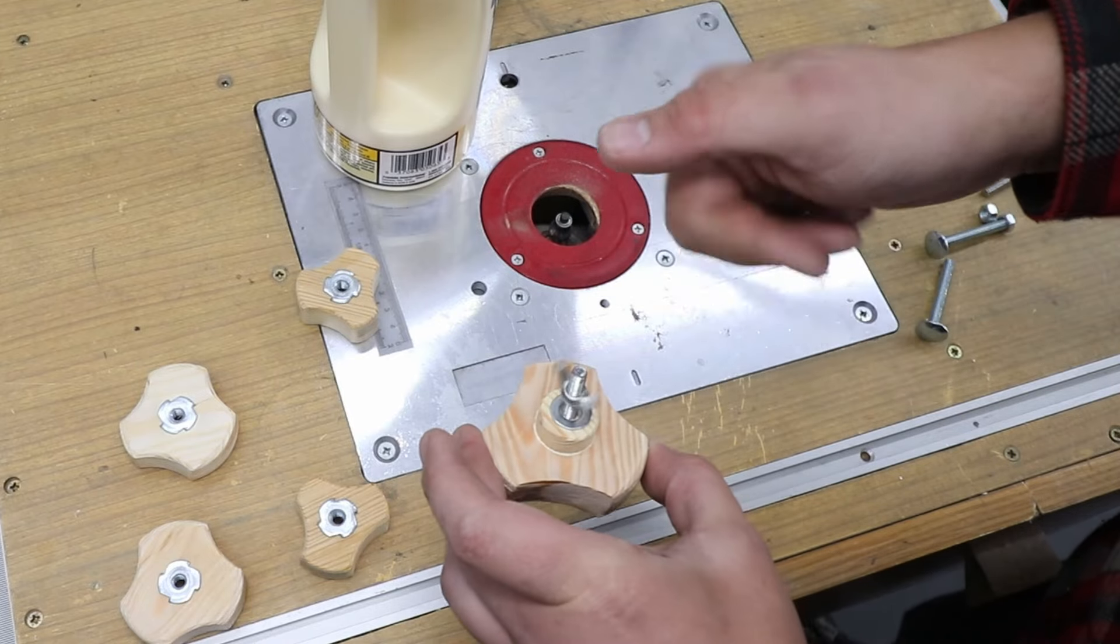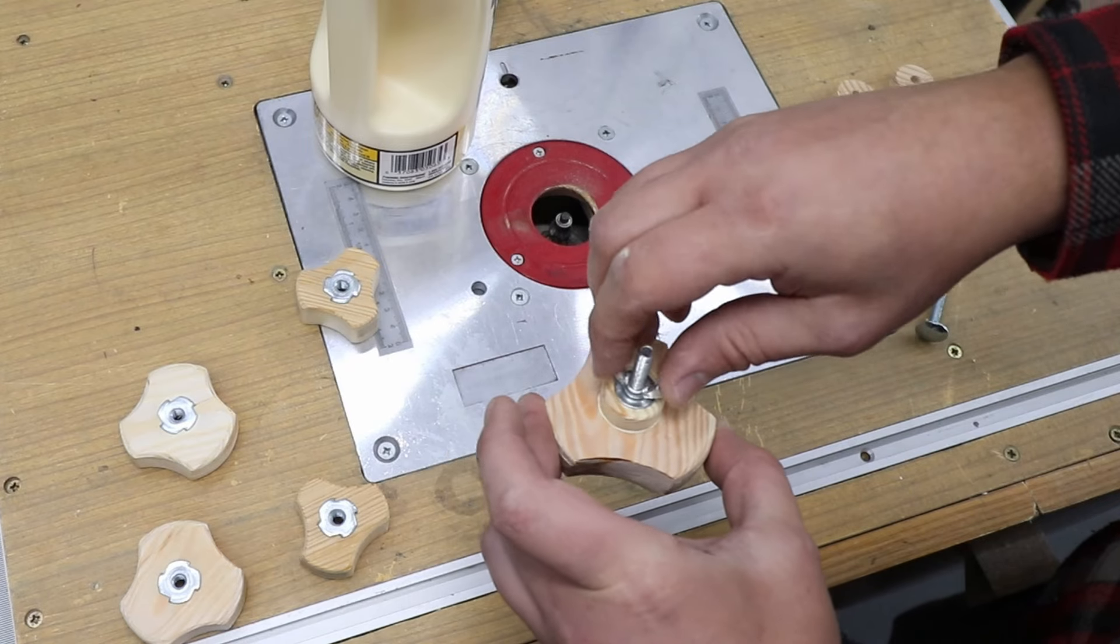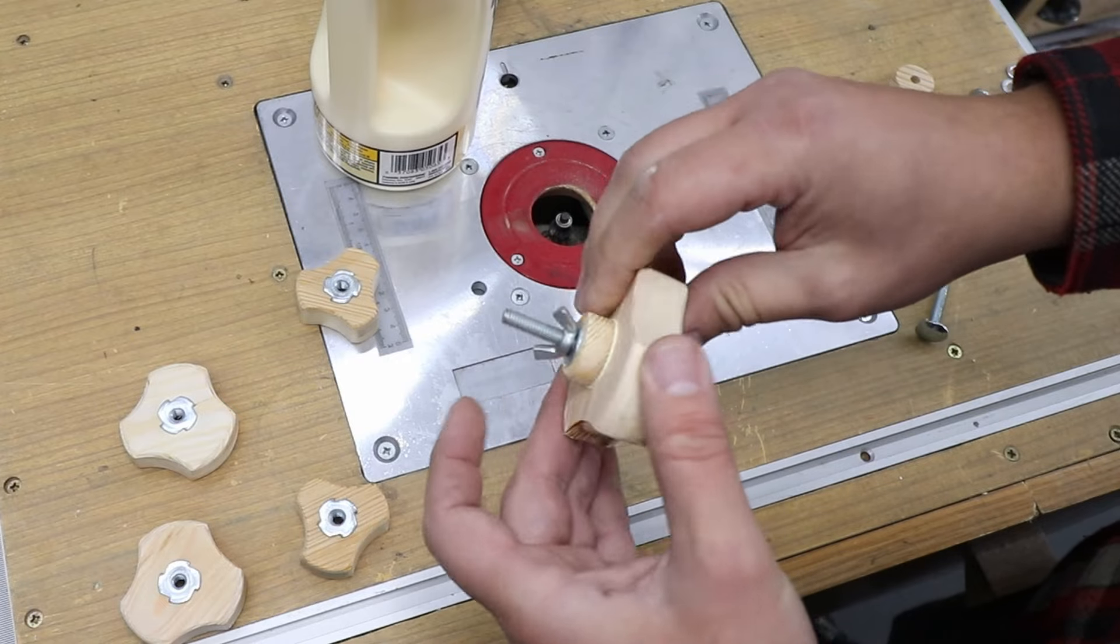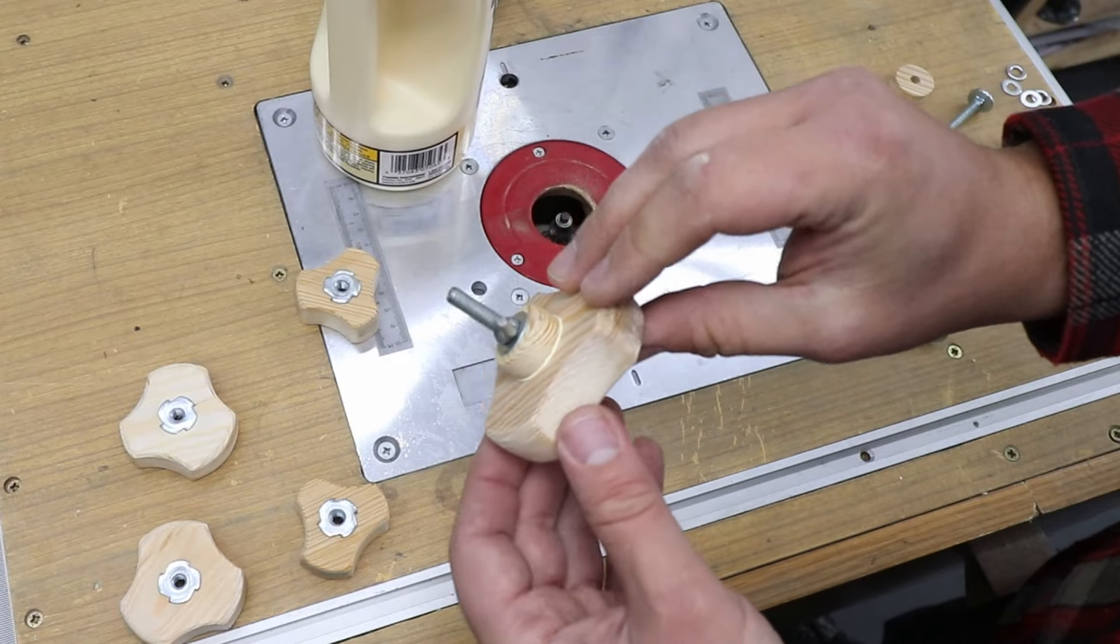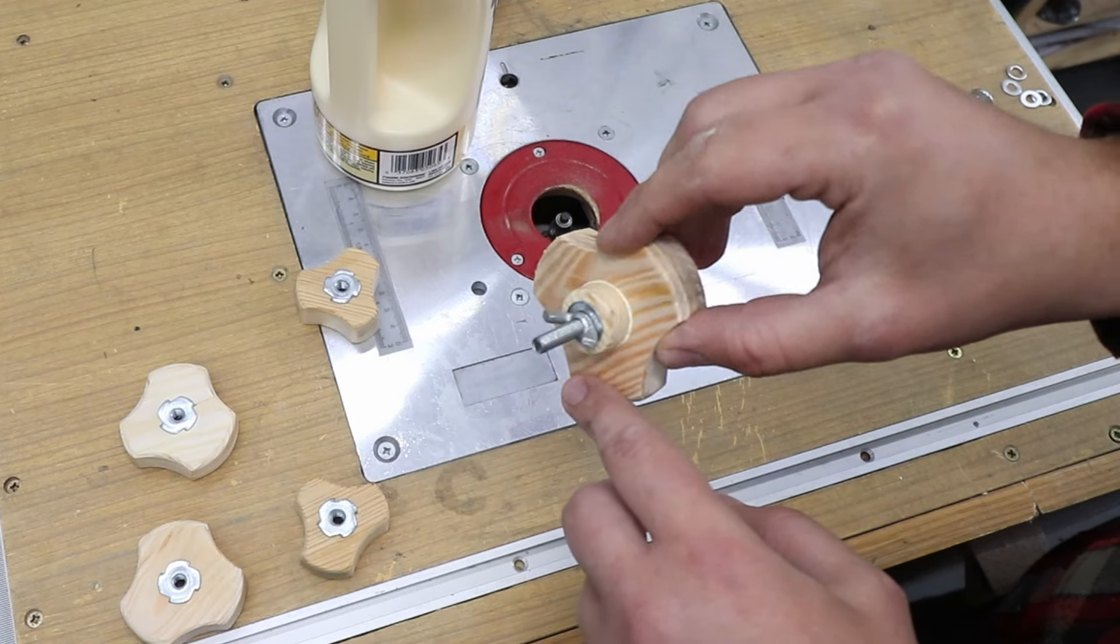No need for clamps, just use a bolt, washer, wing nut or a normal nut. There you go, it's clamped down. Now I'm going to do the same thing with the rest of them and I'm going to wait for the glue to dry.